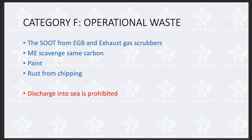Now we will see what are the examples of products which come under operational waste. After your EGB washing, the soot comes — that will come under operational waste. Exhaust gas scrubbers, EGCS system inspection and cleaning — the soot that comes from that also falls under operational waste.